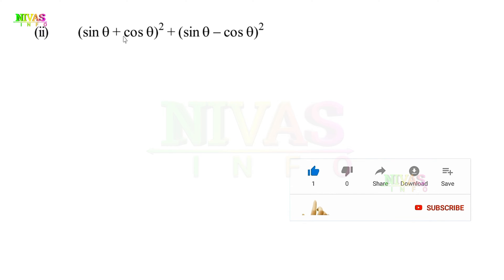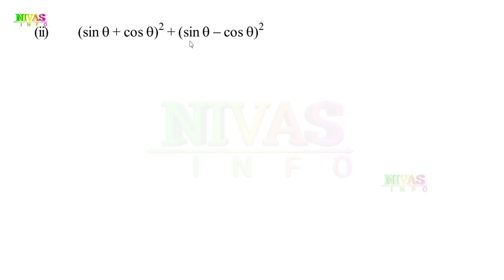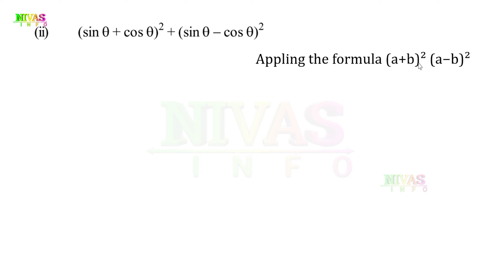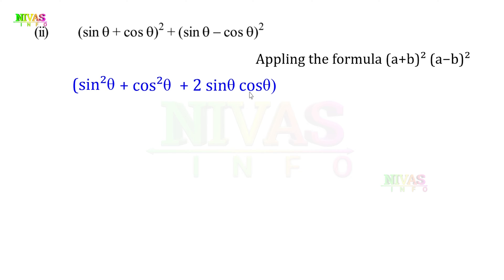Second problem: (sinθ + cosθ)² + (sinθ - cosθ)². Applying the formula a + b whole square and a - b whole square. Expanding: (sin²θ + cos²θ + 2sinθ·cosθ) + (sin²θ + cos²θ - 2sinθ·cosθ), where a is sinθ and b is cosθ.